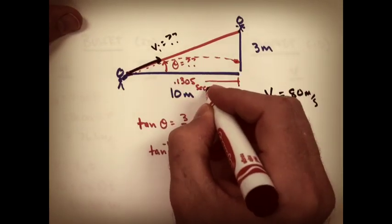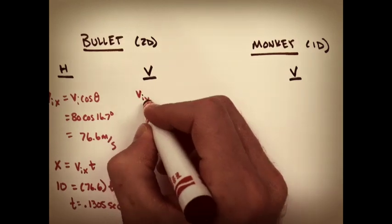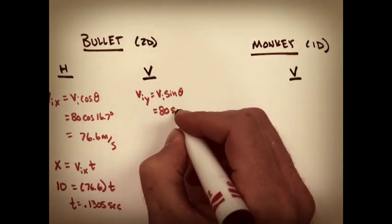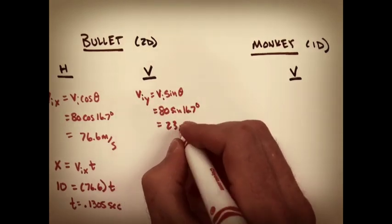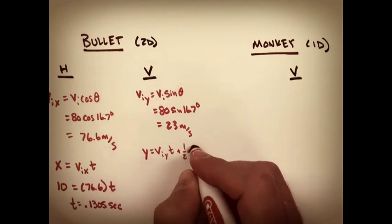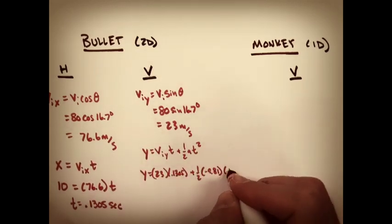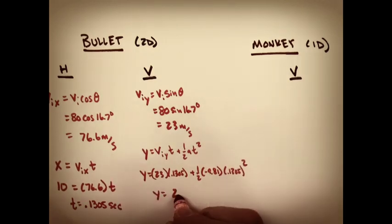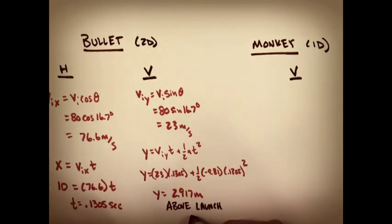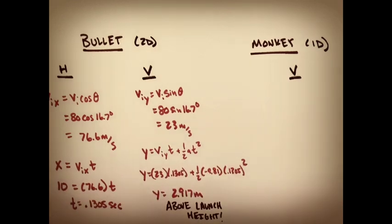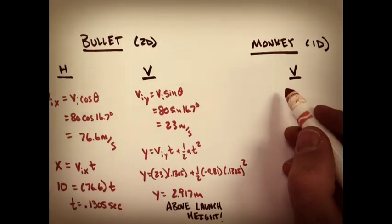Now figure out where the bullet is vertically at that time. We know the bullet's vertical initial velocity, acceleration, and we know the time. Where is the bullet at that exact same moment? Using the kinematic equations again, we can figure out the bullet's vertical position.